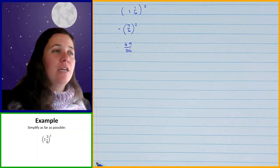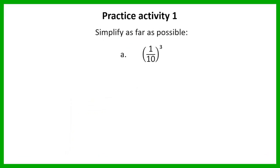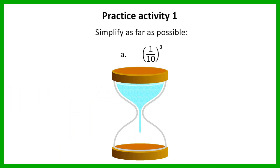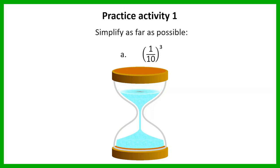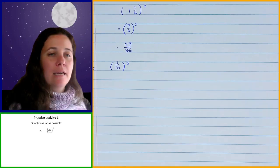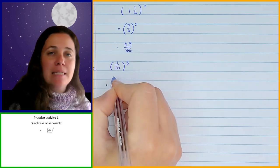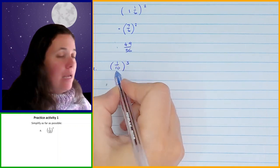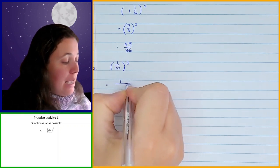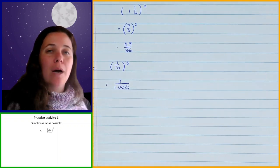So now I'm going to give you one to do for yourself — you have 30 seconds to work on this. In this case, you had 1 tenth cubed. Now it's not a mixed number, so I don't have to convert anything. We can go straight on to doing our cubing. When I cube 1, it stays the same, and then 10 cubed is 1000. So you should have got 1 over 1000 for that example.